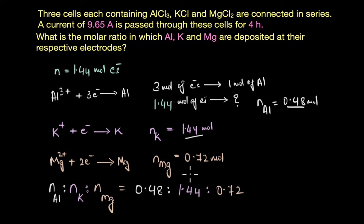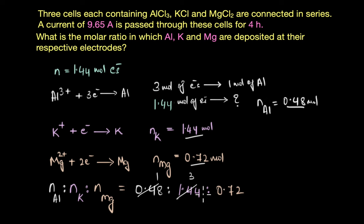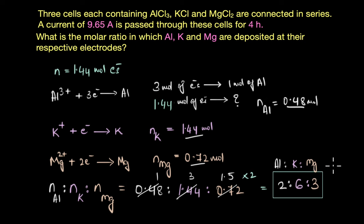The molar ratio of aluminium : potassium : magnesium deposited is 0.48 : 1.44 : 0.72. Dividing by the smallest number, 0.48, gives 1 : 3 : 1.5. Multiplying through by 2 to obtain whole numbers, the final molar ratio is 2 : 6 : 3.